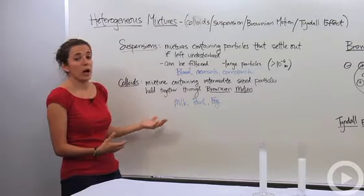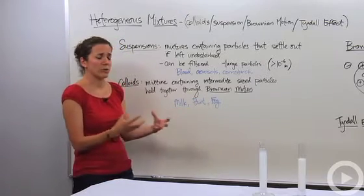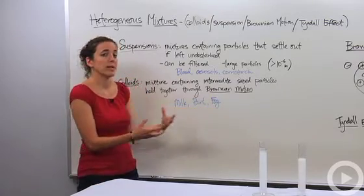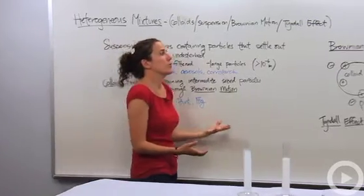Different types of colloids would be milk, where the particles are kind of big but not as big, paint and fog, where they actually stay together and don't filter out. So let's talk about what Brownian motion is.